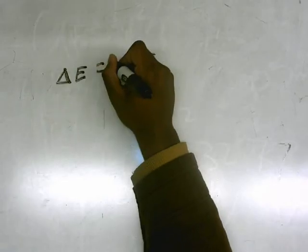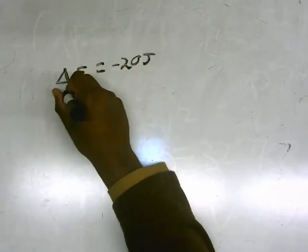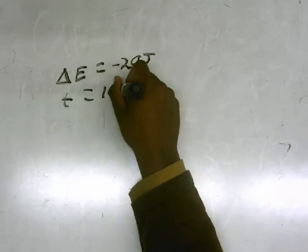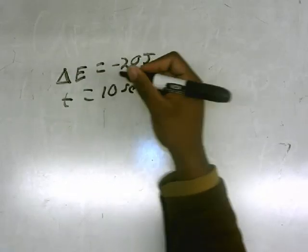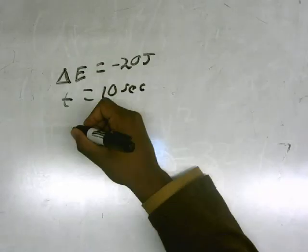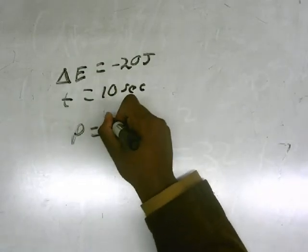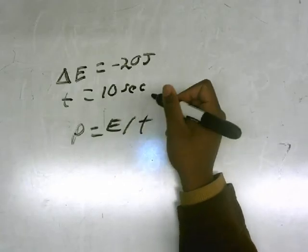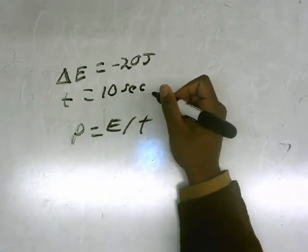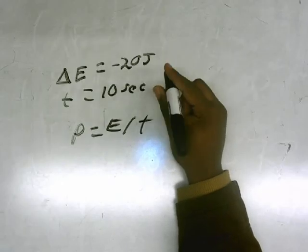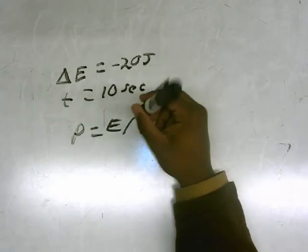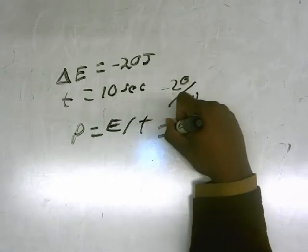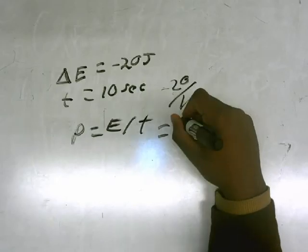Here I have t for time equals 10 seconds, and the equation I will use is P equals energy over time. So simply all I do is divide energy by time, which equals negative 2 watts. That's it.